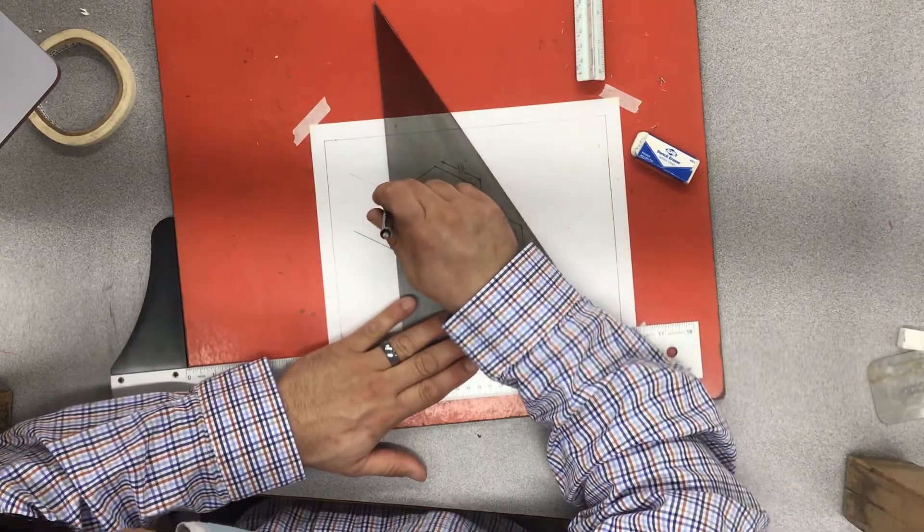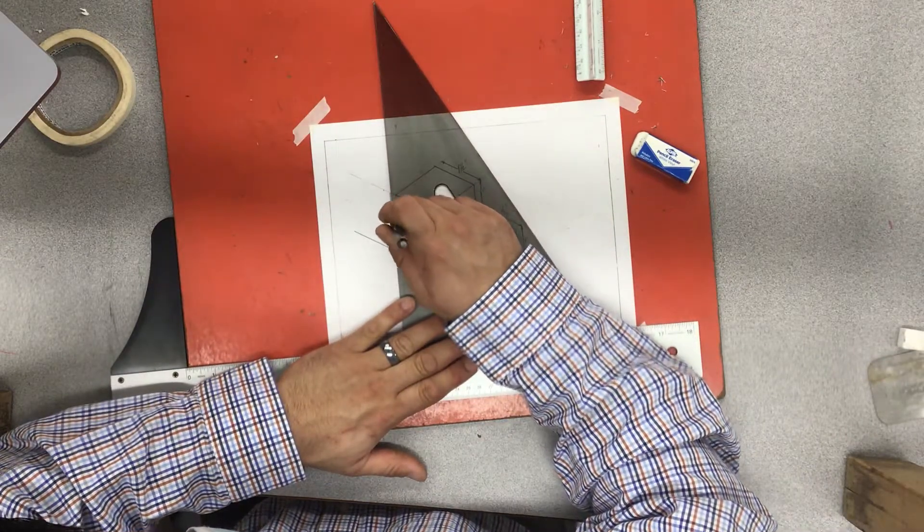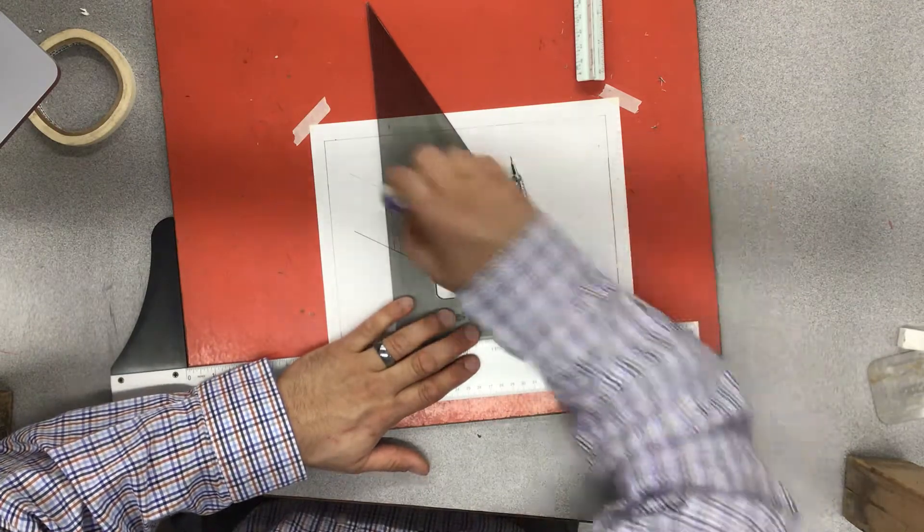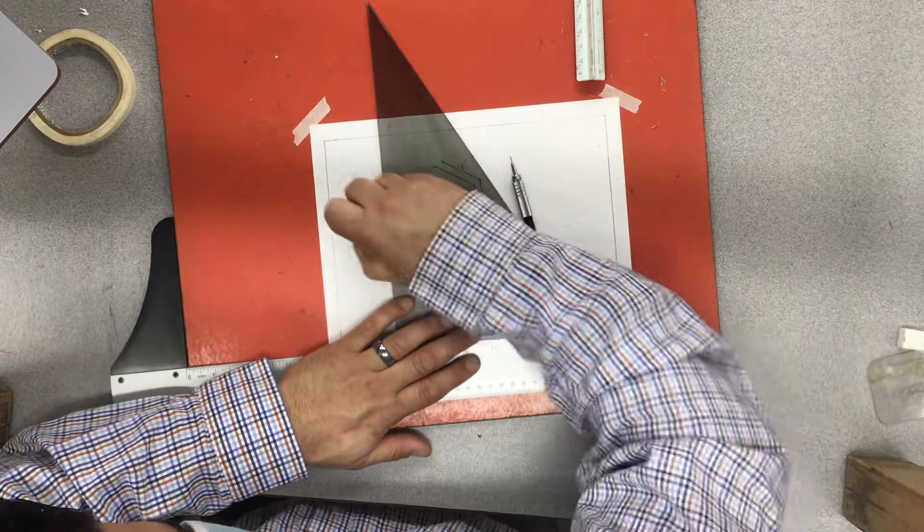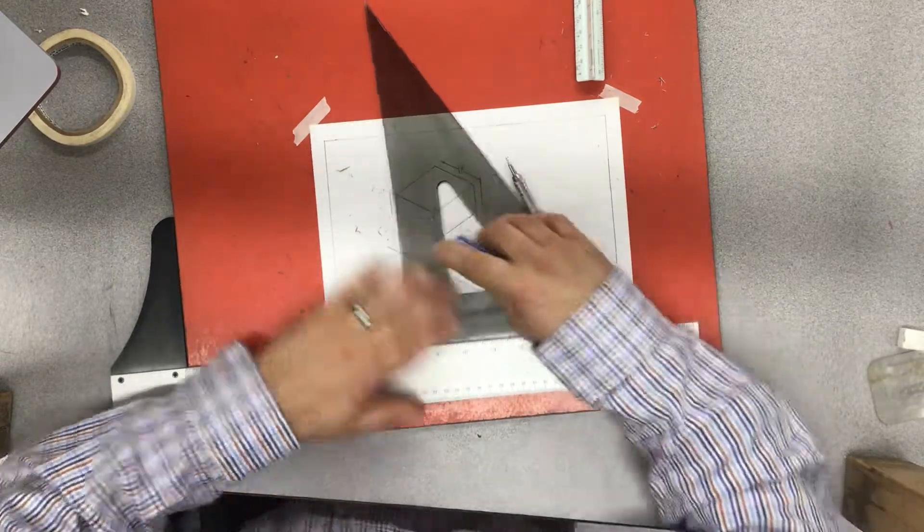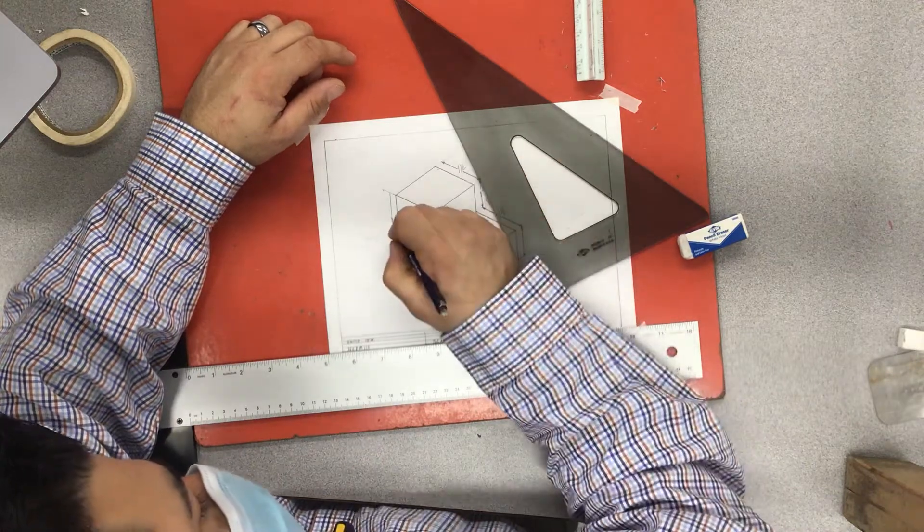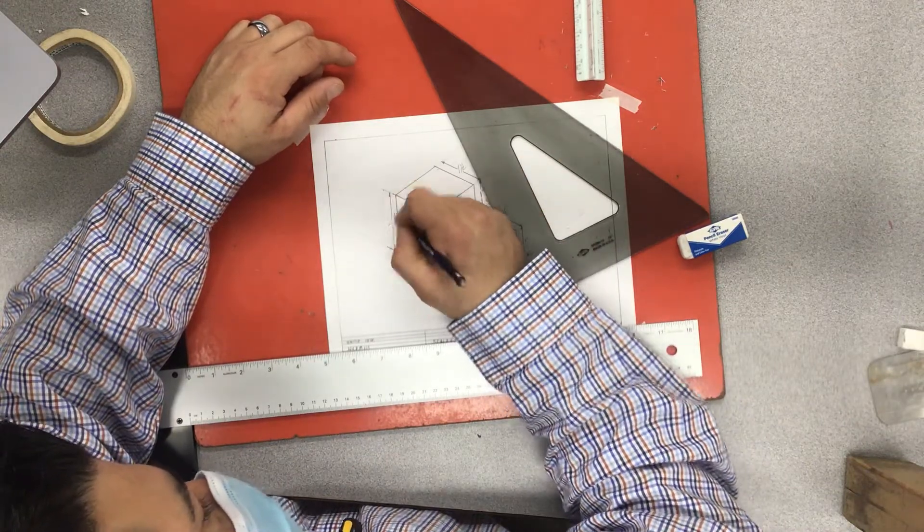All right, we're going to come over here, quarter inch. Throw my dimension line. Slide over to half inch, erase the extra. All right, write my dimension in. This is two inches. Two inches with the arrows.